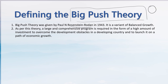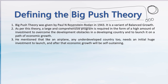Development means not just GDP growing, but along with GDP, our government policies are also improving, poverty is reducing, social security benefits are available, unemployment is decreasing — all these things together mean a country is developing. To achieve that development, Rosenstein-Rodan says that rather than making small investments, a large lump sum investment is required so that the economy can reach the growth level it wants to attain. He mentioned that like an airplane, any underdeveloped country needs an initial huge investment to launch, after that economic growth will be self-sustaining.